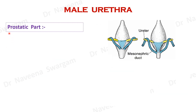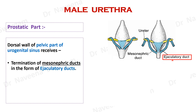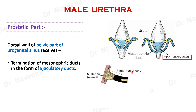Let's see the development of prostatic part of male urethra. By the end of the eighth week of development, the dorsal wall of pelvic part of urogenital sinus receives caudal portions of mesonephric ducts in the form of ejaculatory ducts. It also receives caudal united portions of paramesonephric ducts in the form of sino-utricular cord, which projects into the lumen of the sinus as mullerian tubercle or mullerian eminence.